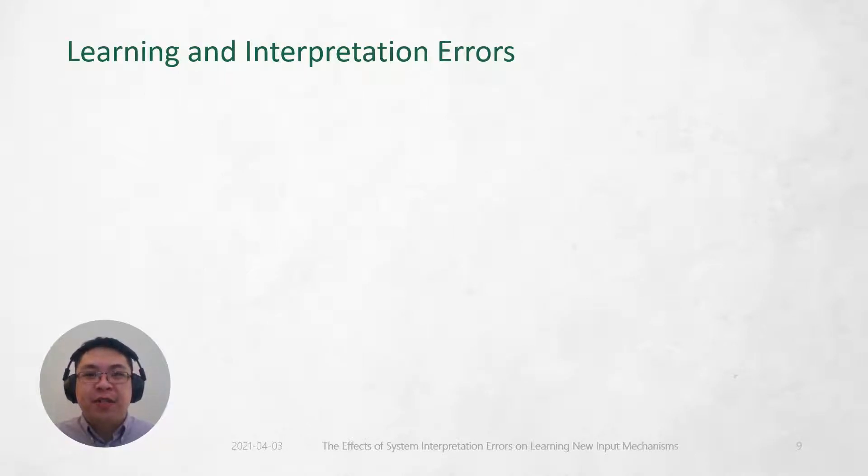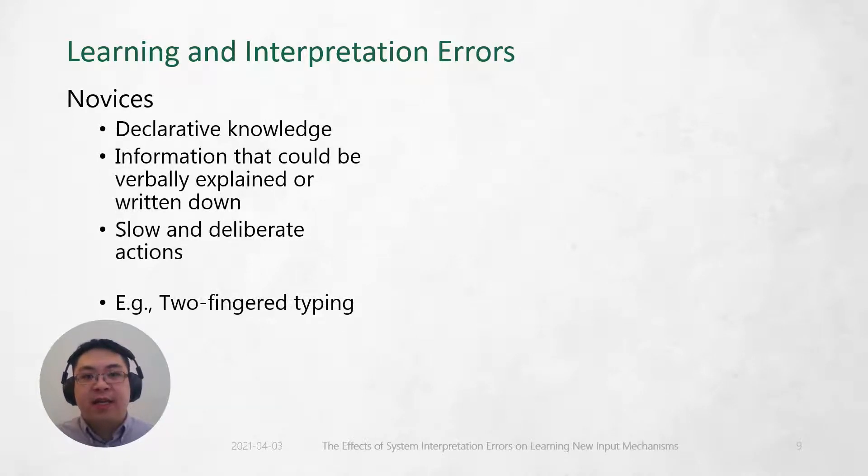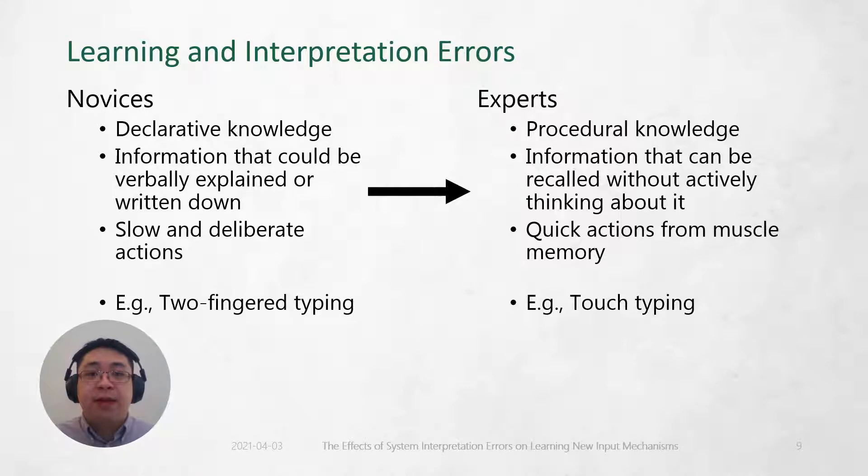We want to understand how interpretation errors would affect a user's process of learning to use an input mechanism. Following Fitz and Posner's stages of expertise development, users start as novices when they first use an input mechanism, and they gradually transition to becoming experts as they use and practice with the mechanism over time.